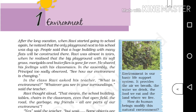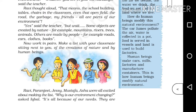In class, Ravi asked his teacher, 'What is environment?' The teacher replied, 'Whatever you see in your surroundings.' Ravi thought aloud: 'That means the school building, tables, chairs in the classroom, even the open field, the road, the garbage, my friends — all are part of environment.' 'Yes,' said the teacher, 'but some objects are created by nature — for example mountains, rivers, trees, animals — while others are made by people — for example roads, cars, clothes, books.'